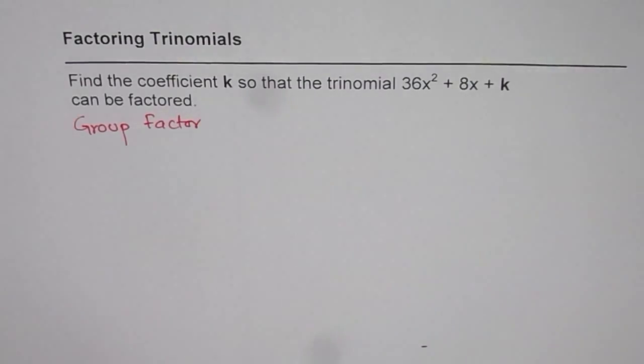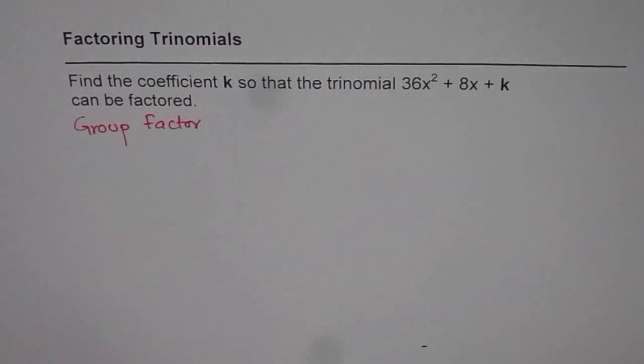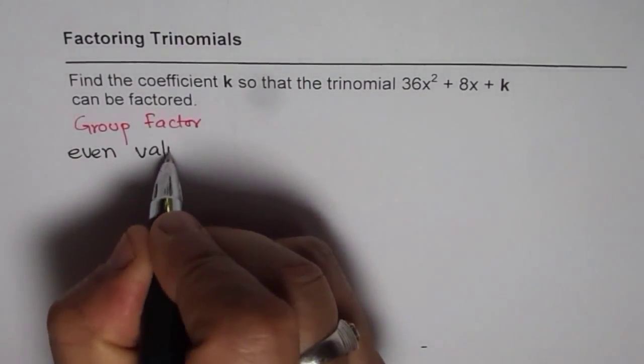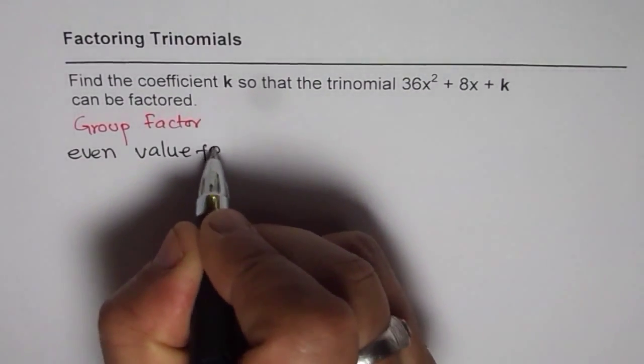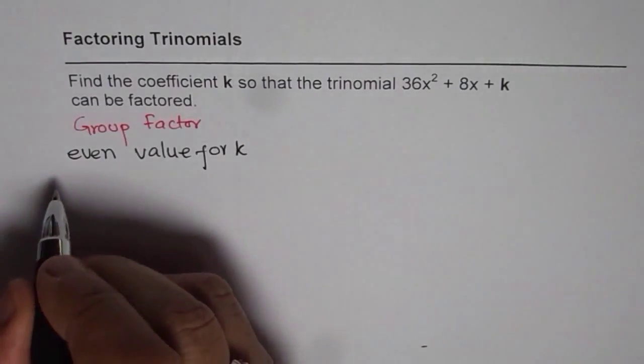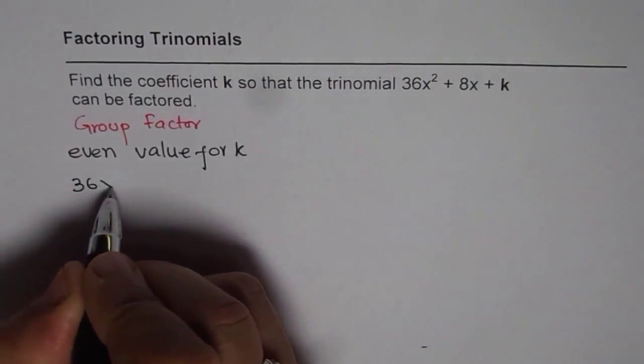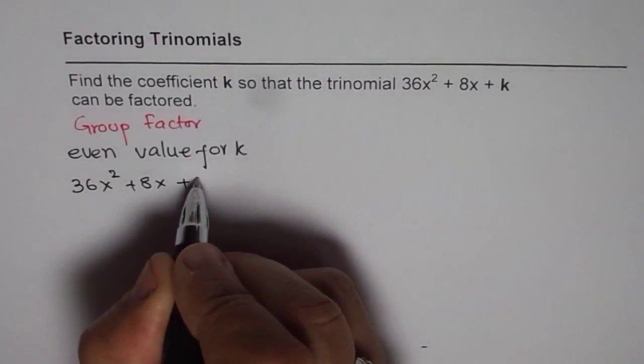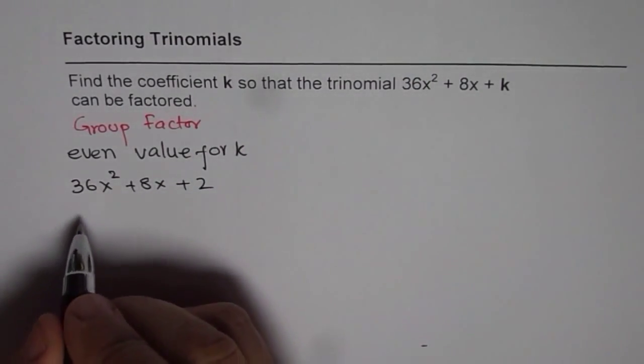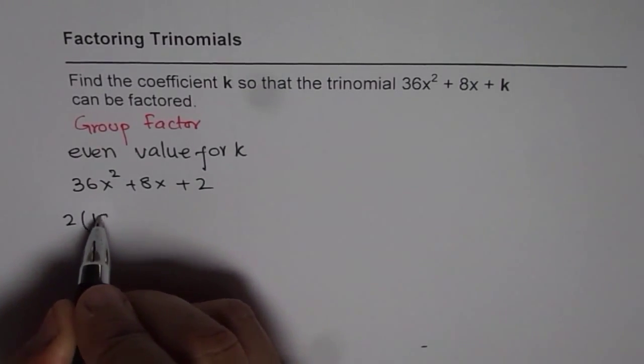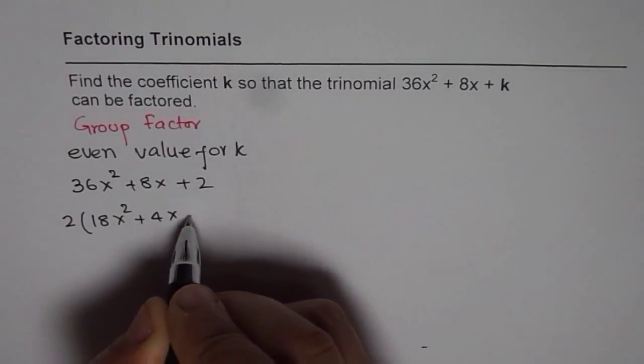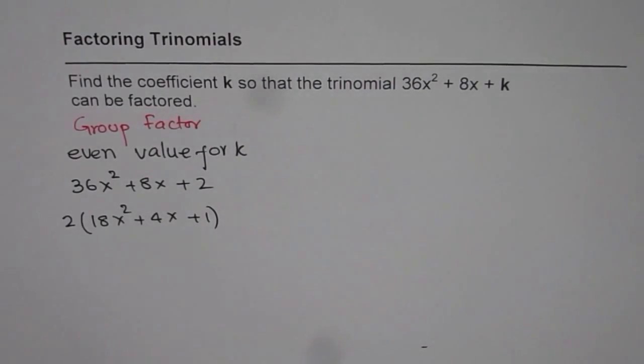If you think about group factoring, in that case you can have any even value for k. For example, you can take 36x² + 8x + 2 for k. In that case you can factor 2 and you get 18x² + 4x + 1. Now that is also factoring.